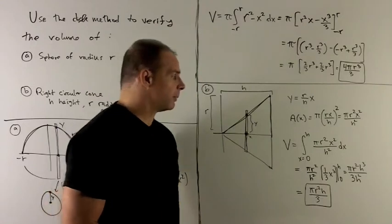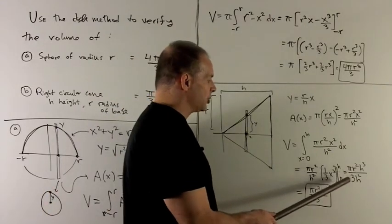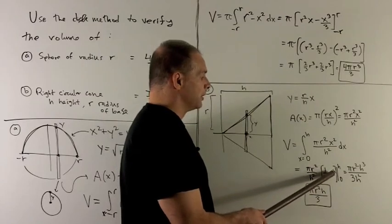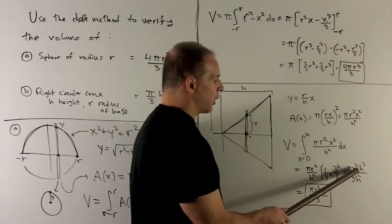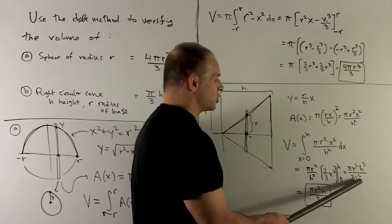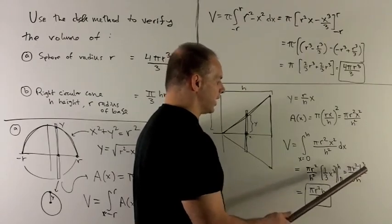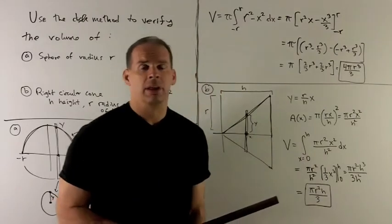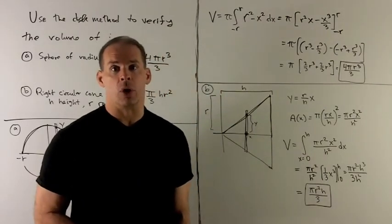So add one, flip it over. We're going to put in h and zero. So that's just going to become one-third h cubed. And that gives me pi r squared h cubed over three h squared. The h squared goes away, the top becomes h. So I have pi r squared h over three. And that verifies my formula for the cone.